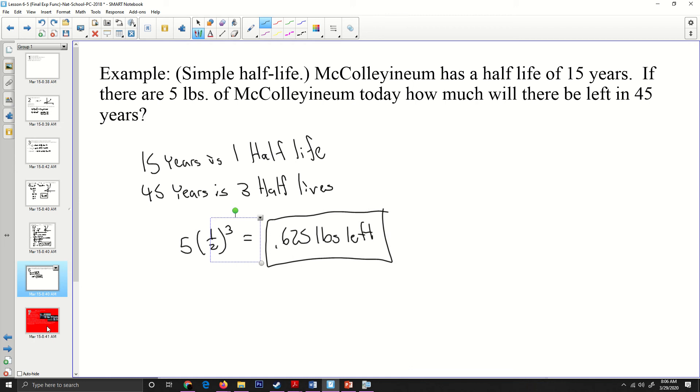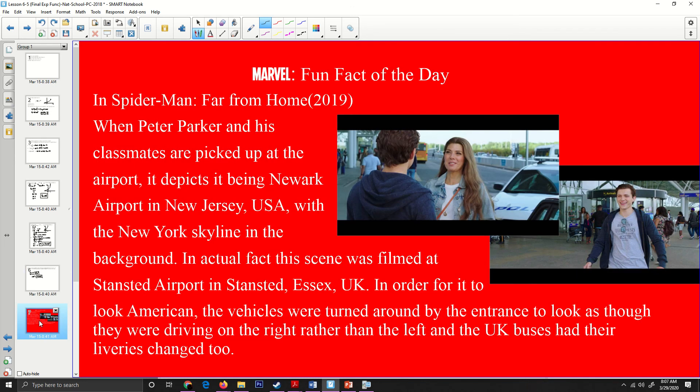All right. Well, that's all I got for today, folks. So the Marvel fun fact of the day in Spider-Man Far from Home from 2019, when Peter Parker and his classmates are picked up at the airport, it depicts being in Newark airport, New Jersey, United States with the New York skyline in the background. But this was actually filmed in the UK, in the United Kingdom, Great Britain. And so in order for it to look like it's American, they had to change all the vehicles and they had to point them the other way because in Europe they drive on the left-hand side instead of on the right-hand side. So there's some movie trickery for you. That's all I got. Have a good day. Bye.